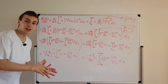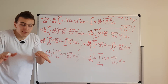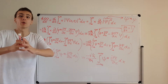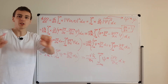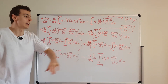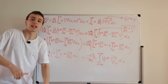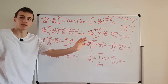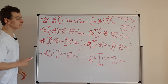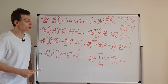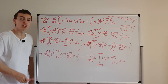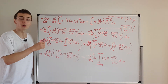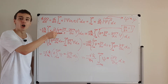All boundary terms were ignored because psi and psi star asymptotically go to zero as x goes to plus or minus infinity, so those terms vanish. Make sure you watch the next video where we use this expression to define the momentum operator, and check out the other videos in this playlist for all the prerequisite steps.